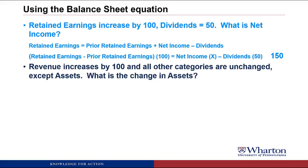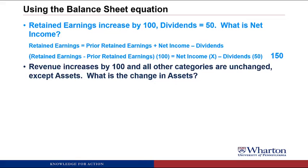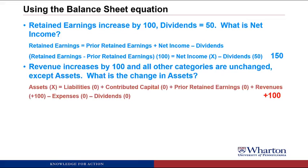Next: revenue increases by 100 and all other categories are unchanged except assets — what is the change in assets? We use the complete balance sheet equation, breaking stockholders' equity into contributed capital, prior retained earnings, revenues, expenses, and dividends. Revenues go up by 100 and everything else is unchanged, so assets also have to go up by 100 so that both sides of the equation increase by 100.